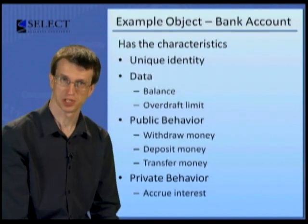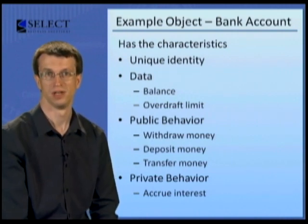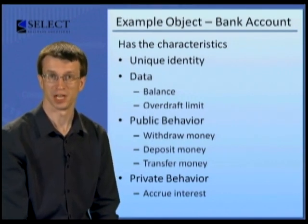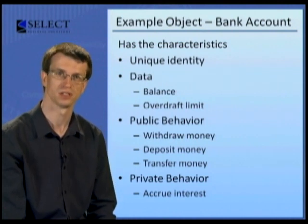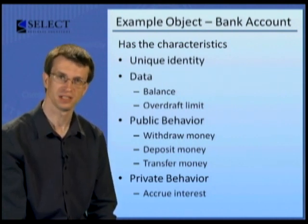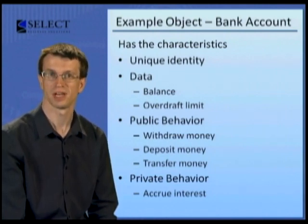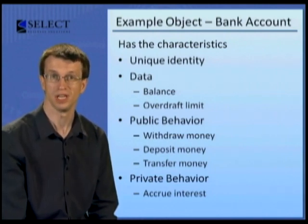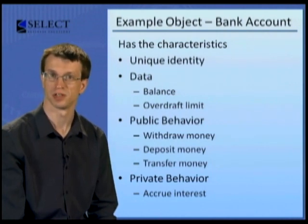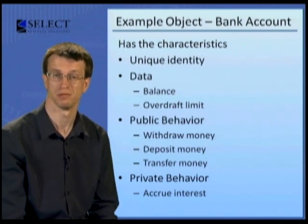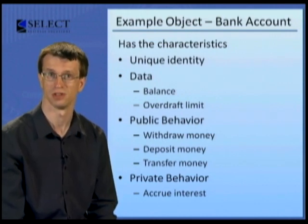Let's give a simple example that you can relate to: your bank account. It can be regarded as an object because it has the following characteristics. A unique identity — your account object, the details of the account are unique to you. It has data, for instance a balance of $550, an overdraft limit of $2,000 and so on.